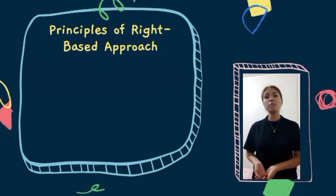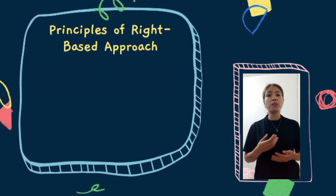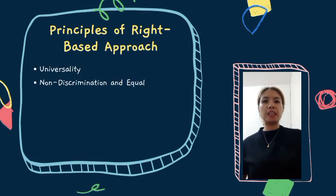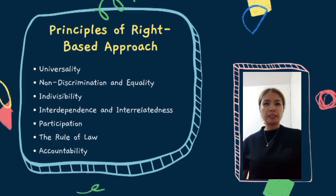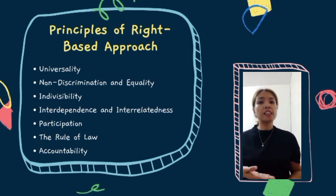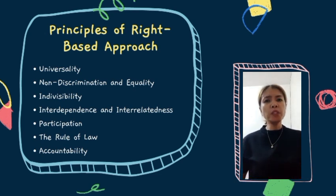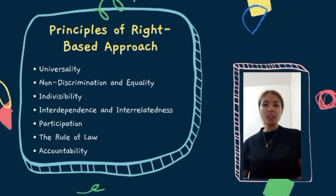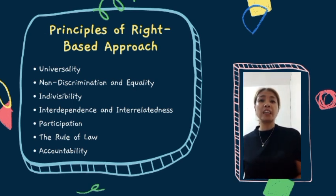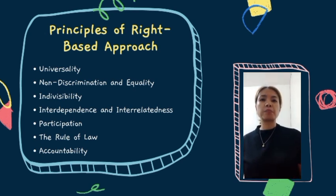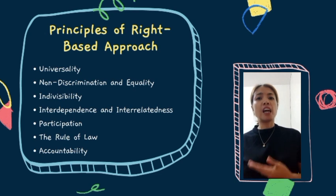Some of the principles that come with the new human rights framework for development are: First, inalienability — human rights cannot be taken away from someone or voluntarily given up. Second, non-discrimination and equality — human rights apply to everyone, everywhere, and under any circumstances. Third, indivisibility — rights are indivisible and should be taken in a holistic way. Fourth, interdependence and interrelatedness — all human rights are closely interrelated and interdependent and affect one another.